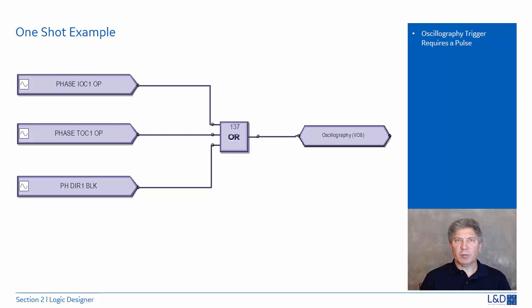Here is an example of a Flexologic circuit to trigger the oscillography capture. The oscillography capture is triggered by a positive going edge. When the IOC operates signal becomes active, it generates a positive going signal that momentarily triggers the oscillography capture.